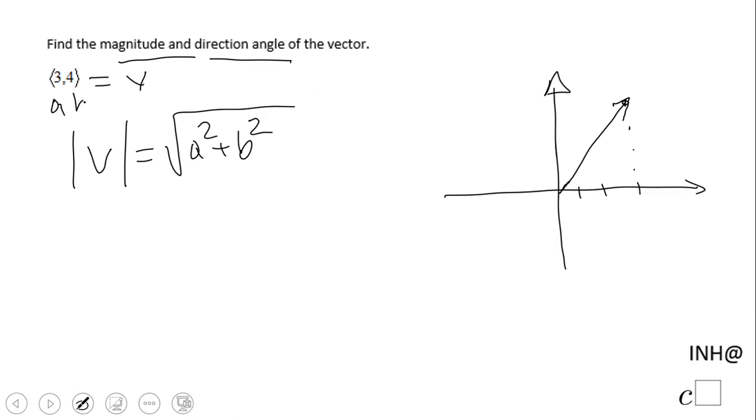So we have square root of 3 squared plus 4 squared, it will be square root of 25. So the magnitude of vector V is gonna be 5.